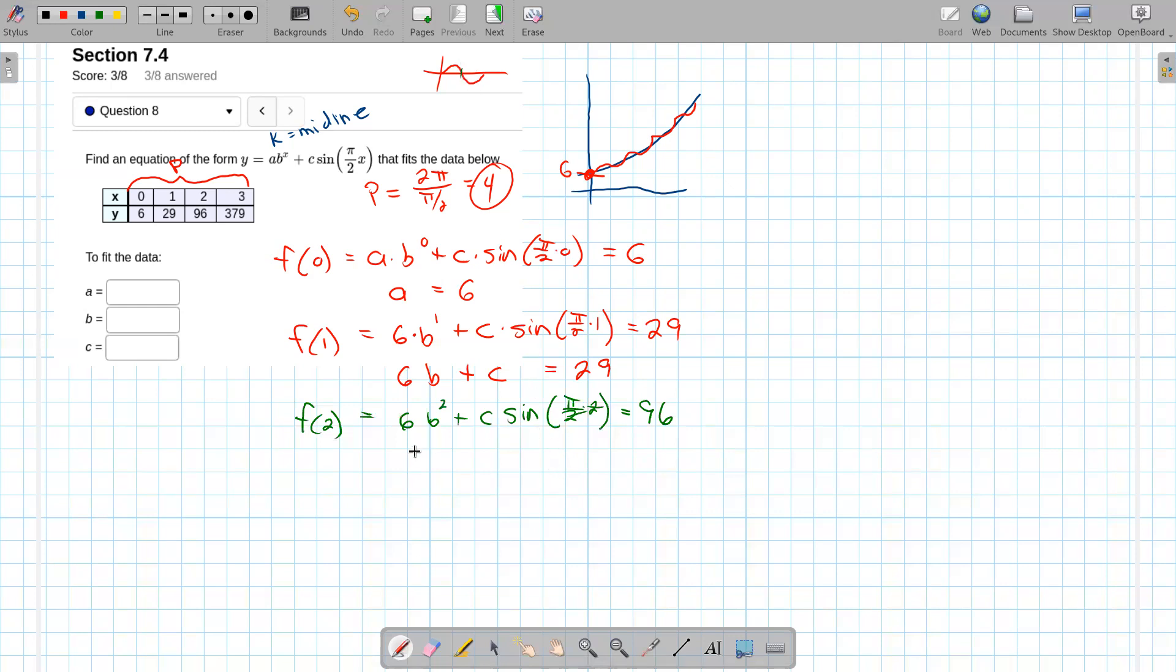So I'm going to get 6b squared equals 96. So then b squared is 96 over 6. 2 goes into 96, 2 goes into 9, 4 times with 1 left over. 2 goes into 16, 8 times. And then 3 goes into 48, 16 times. So it looks like b squared is 16.